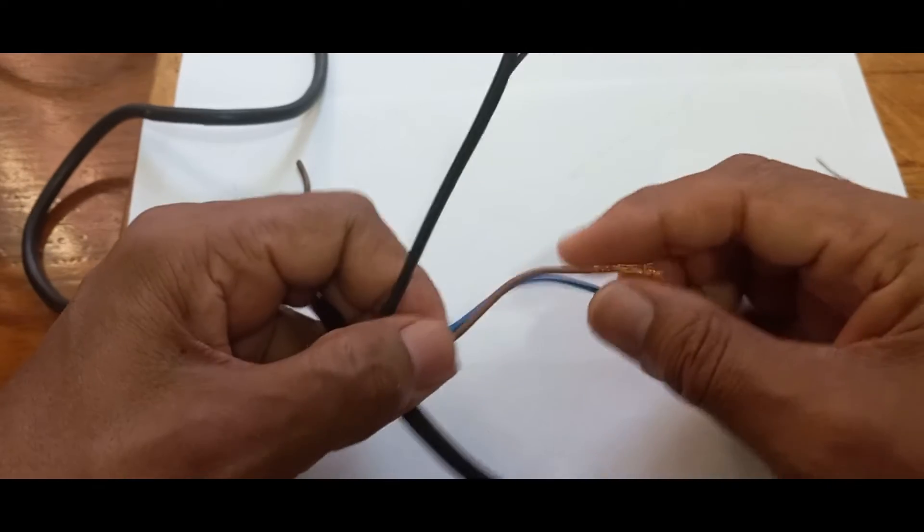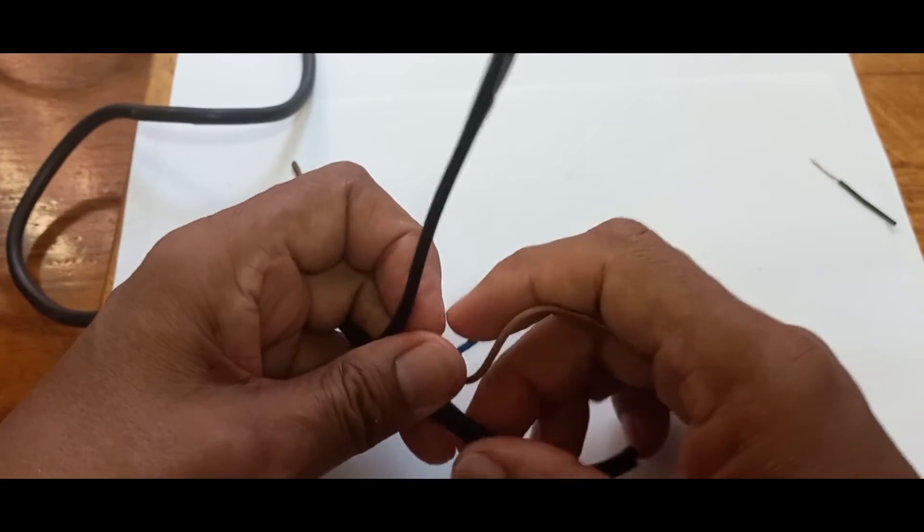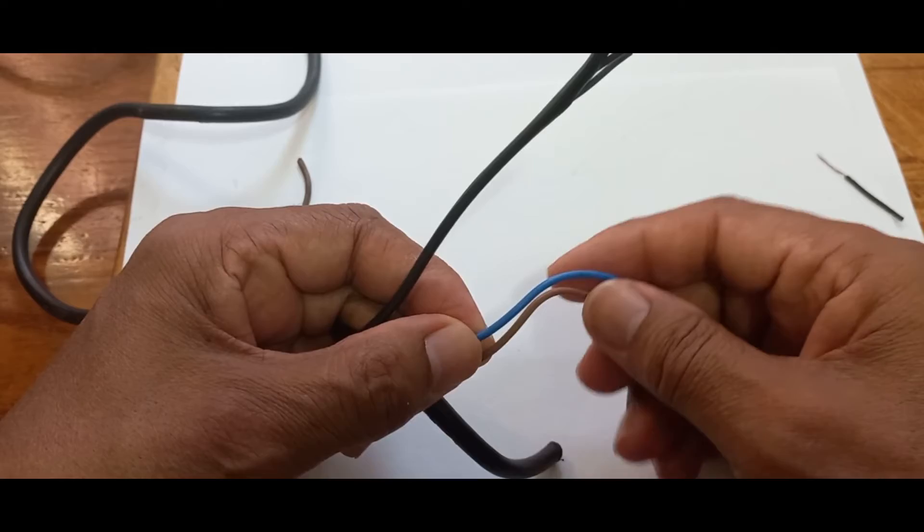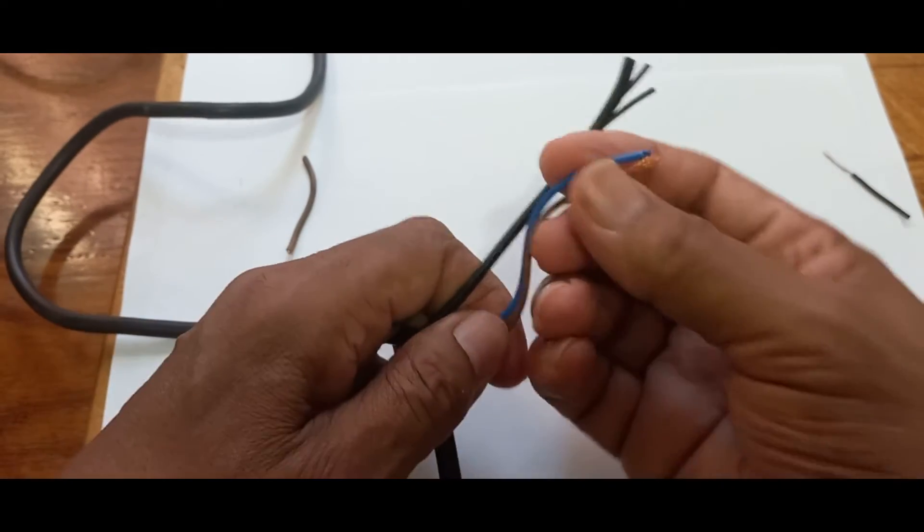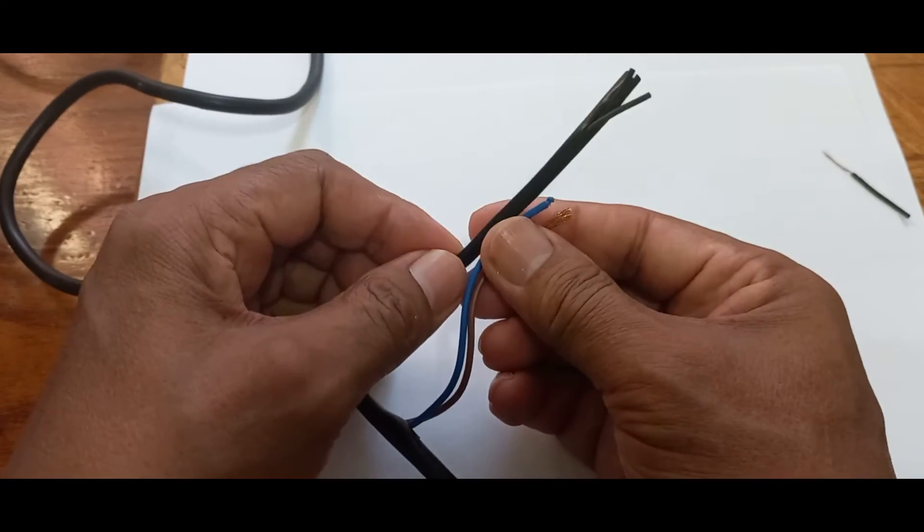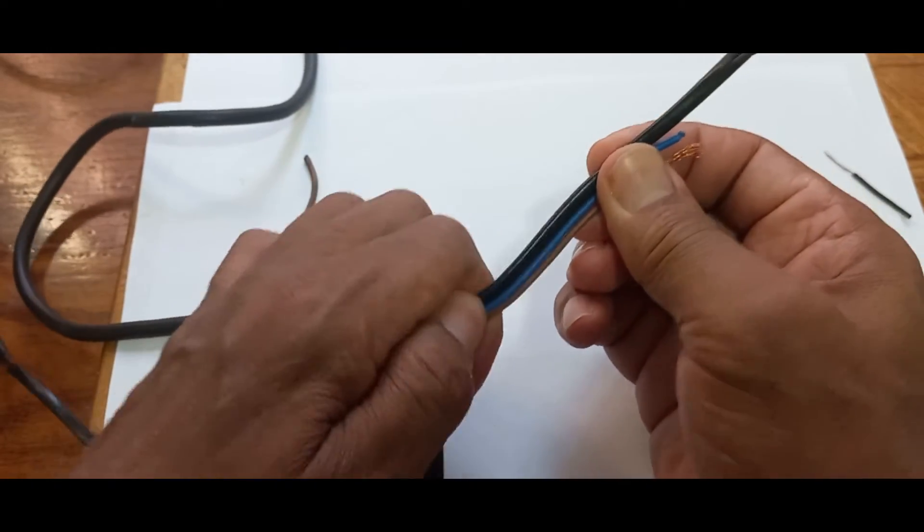So I opened up the thicker piece of cable and I exposed it, just two that I wanted. Now I'm going to take these, make the thinner piece longer and then I'm going to tie it.